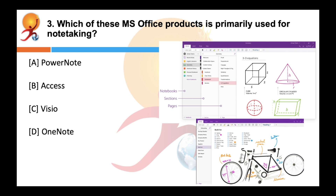Which of these MS Office products is primarily used for note-taking? The correct answer is D — Microsoft OneNote is a note-taking program that gathers handwritten or typed notes, drawings, screen clippings, and audio commentaries. With this software, notes can be shared with other users over the internet.